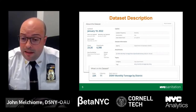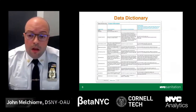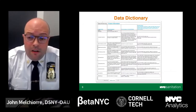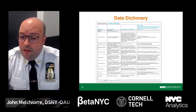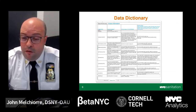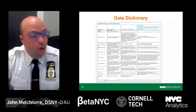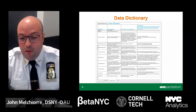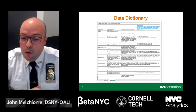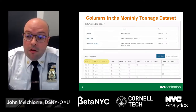In the attachment section, you can access the data dictionary. The data dictionary explains each column in the data set and provides links for additional information. Please don't try to read the slide — the print is way too small. We'll go over briefly what each column represents throughout the presentation.